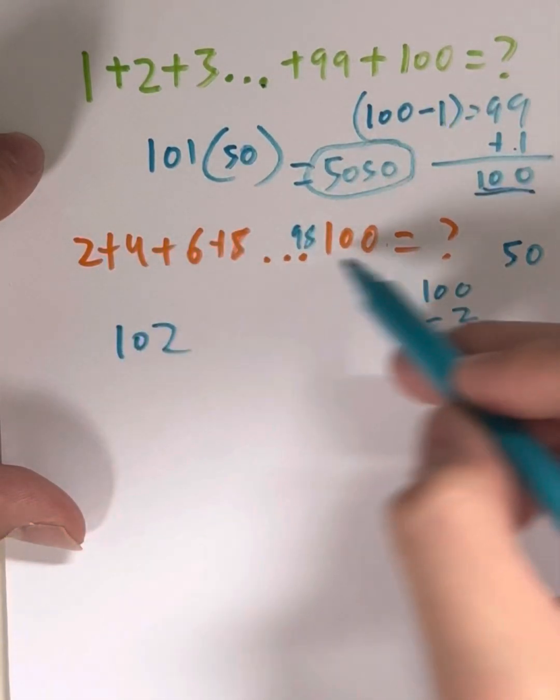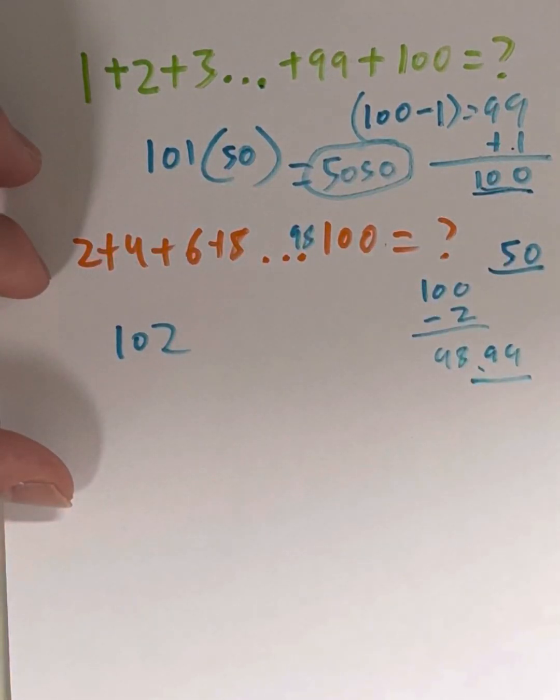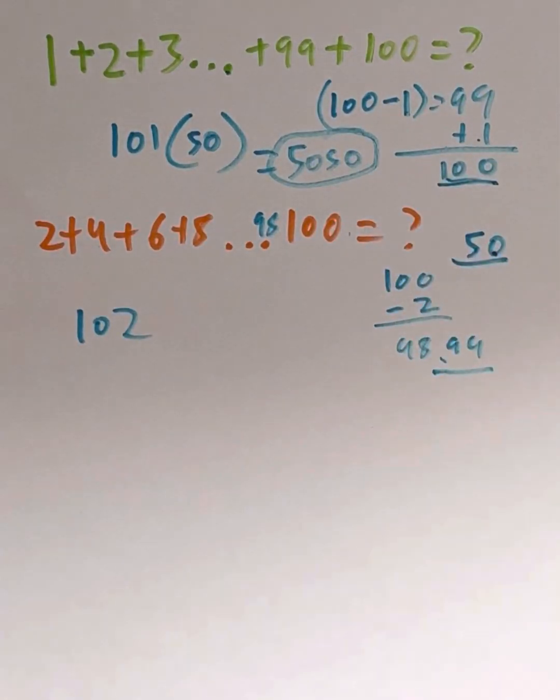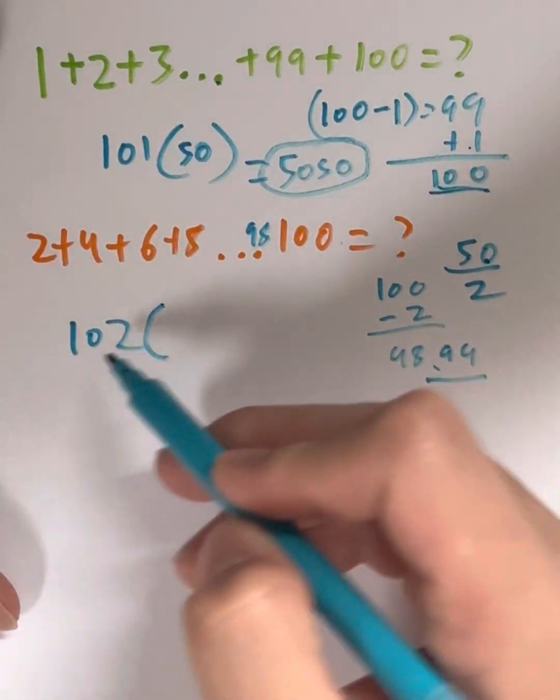So there are going to be 50 numbers in this set. 2, 4, 6, 8, 10, 12, all the way up to 100. That's 50 numbers. We're going to use reasoning to get that. So there are 50 numbers in total. Each pair has two numbers. So 50 divided by 2 is going to give us 25. So in total, we have 25 pairs.